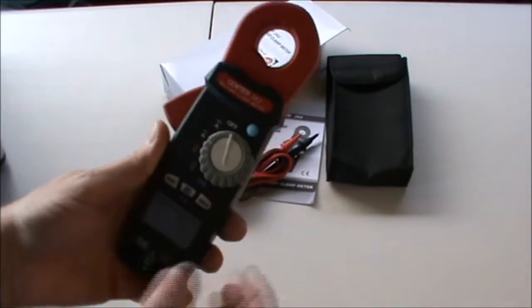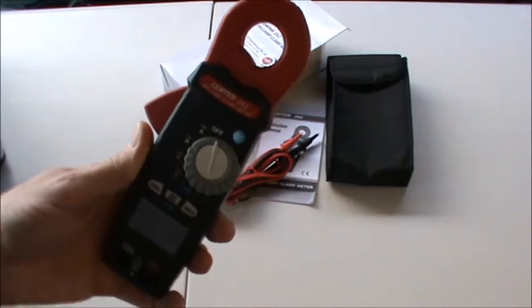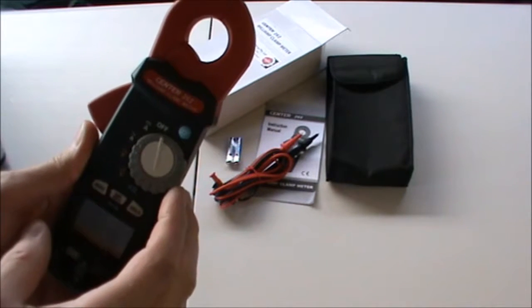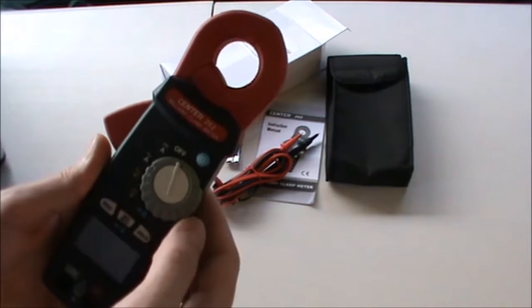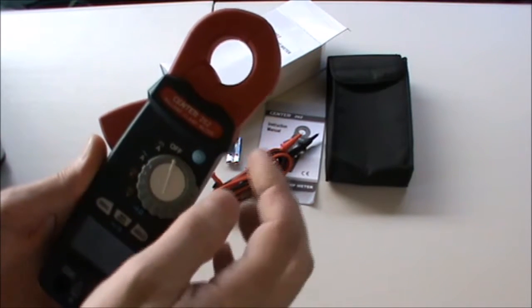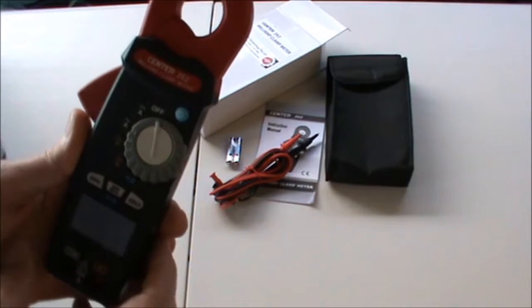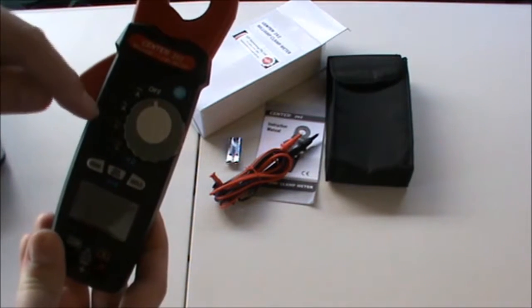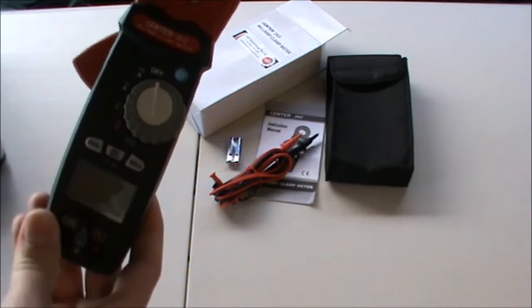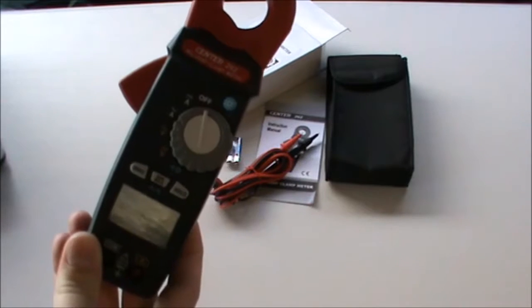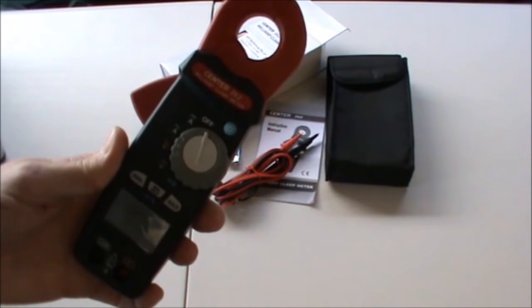The device itself, as the name says, it's a milliamp clamp meter or high resolution clamp meter. So 0.1 of a milliamp resolution is the key feature of this device, both on AC and DC milliamp clamp current. Other features on the instrument include AC voltage, DC voltage, ohms and continuity test. So it really is a general purpose multimeter as well as the clamp meter function.